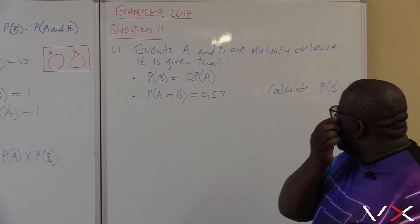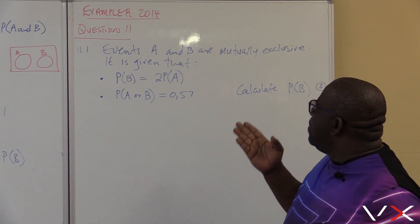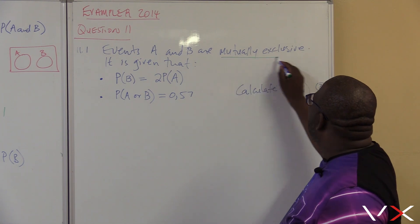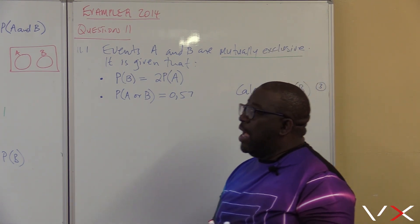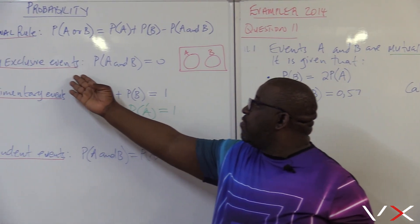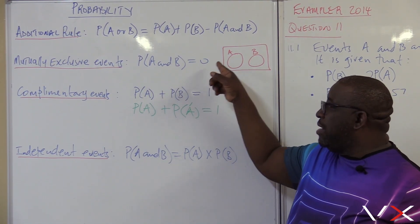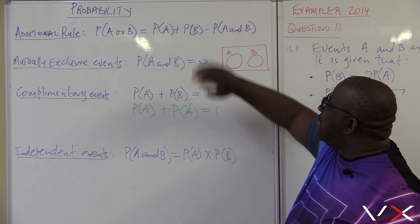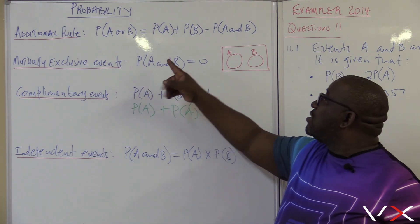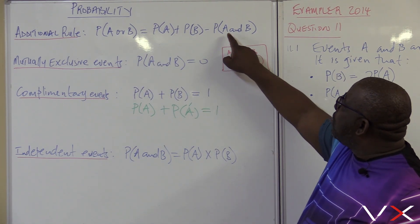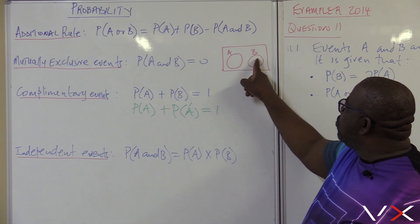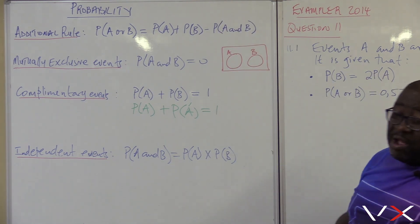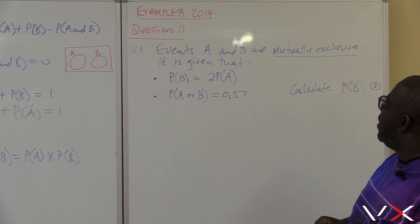Question 11, from the 2014 exemplar paper. Events A and B are mutually exclusive — this becomes my keyword. What do I know about mutually exclusive events? I look at my table. Mutually exclusive events: probability of A and B is zero. There is no intersection. Once they say mutually exclusive events, on my addition rule, I know that probability of A and B is zero — they've already given me the value of probability of A and B by saying that the events are mutually exclusive.